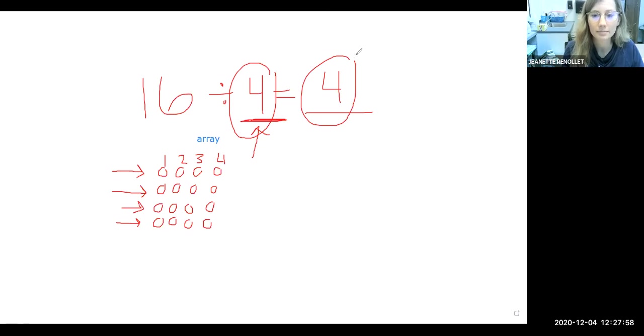Let's try another problem. I want you to show me an array with rows and columns. I would like for you to show me 50 divide by 5. 50 divide by 5. Show me an array with rows and columns.